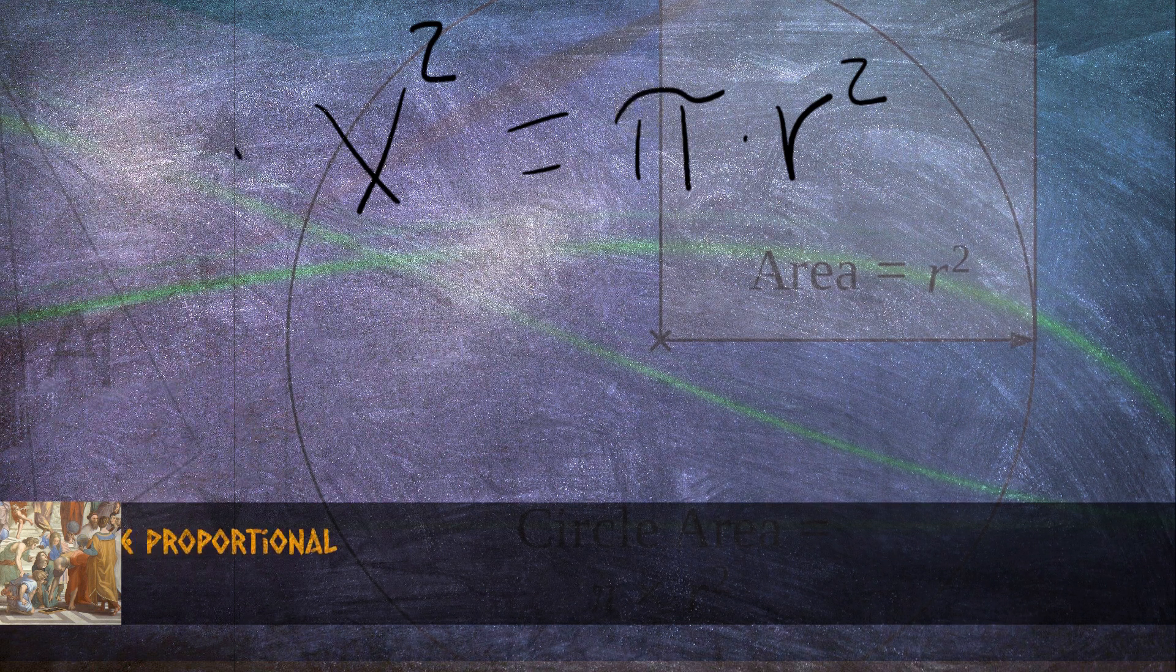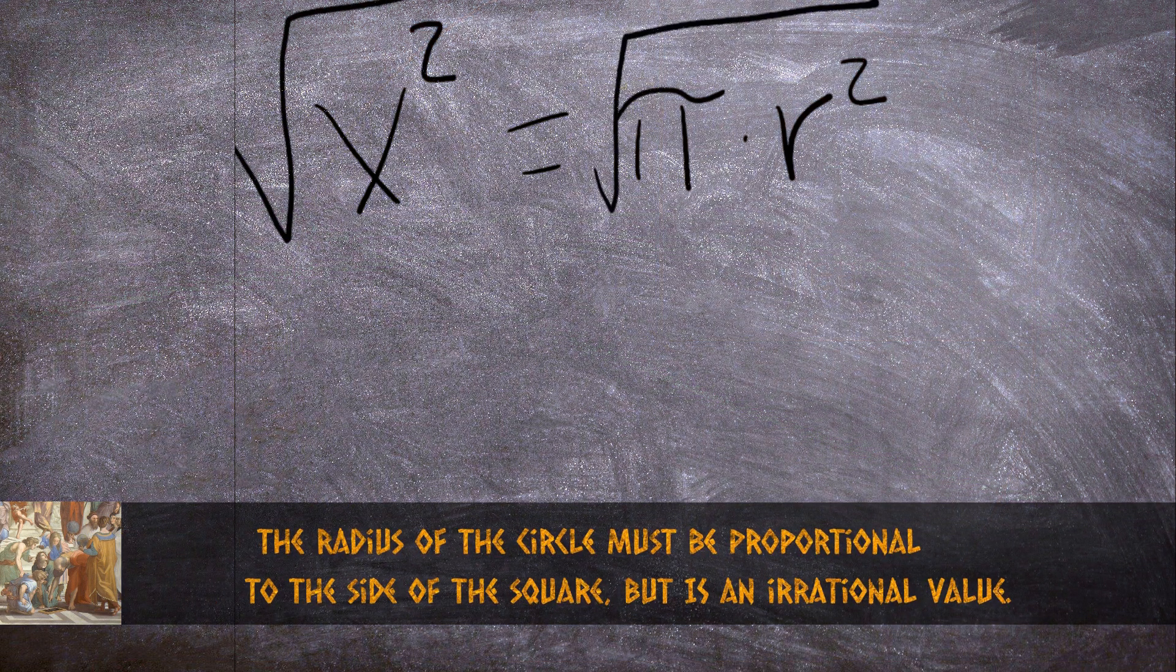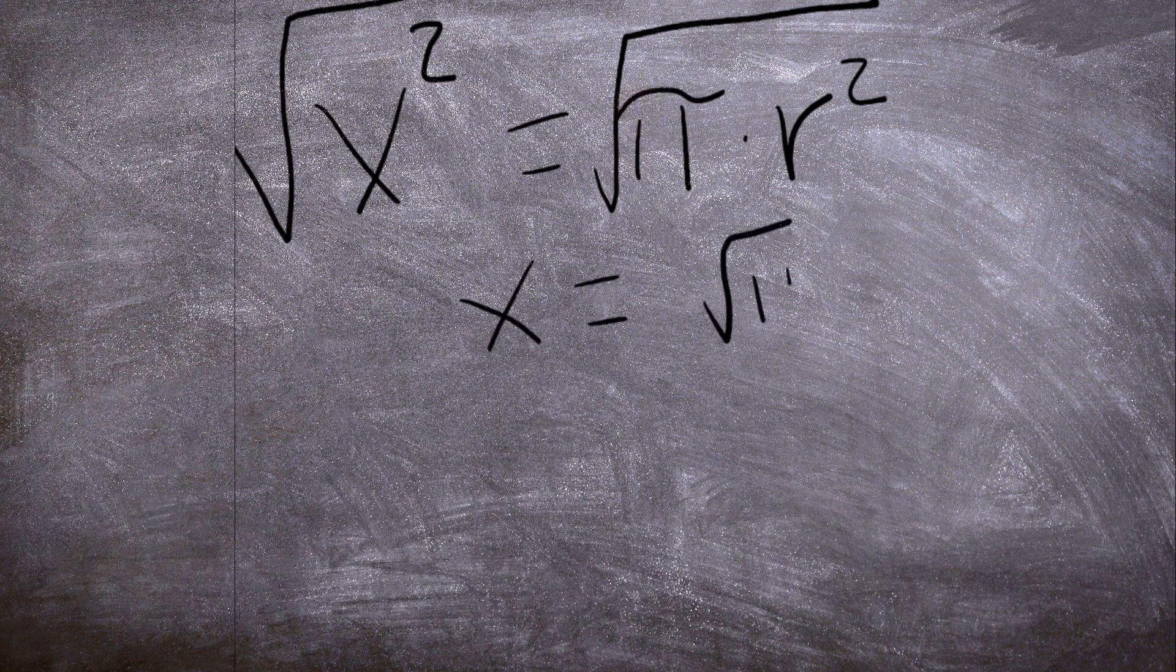The proportion for the side of the square and the radius of the circle must be exactly equal to the square root of pi. And we already know what happens when the value is irrational.